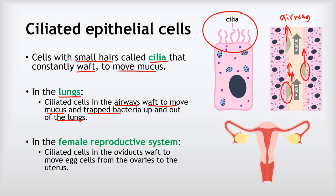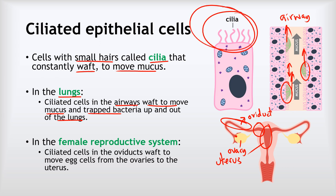The other place where we find ciliated epithelial cells is in the female reproductive system. The uterus is where an embryo or fetus will develop, and the ovary is where eggs are released from. The oviduct, also known as the fallopian tube, connects them. Eggs are released from the ovary and need to get to the uterus — but eggs can't swim. The oviducts are lined with ciliated epithelial cells that waft continuously to gradually move the egg along the oviduct towards the uterus, enabling a pregnancy to take hold if that should happen.